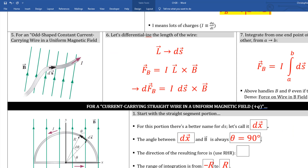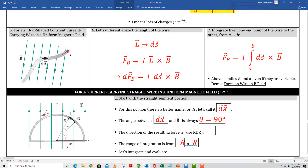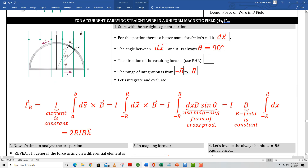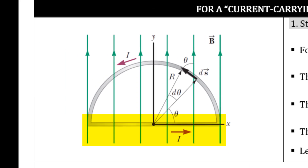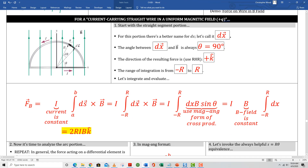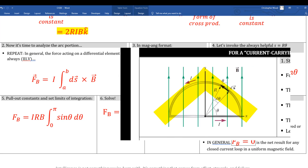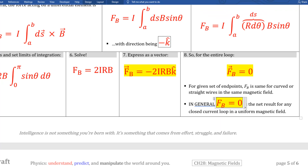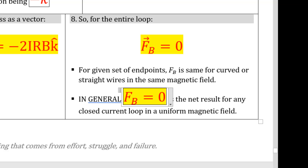Box 5 relaxes the requirements: instead of a straight wire, any-shaped current-carrying wire in a constant magnetic field with constant current is subjected to this force expression. For a wire shaped into a semicircle, break it into two components — the straight line segment and the semicircular arc. The straight line segment has a magnetic force of 2RIB in the k-hat direction. Studying boxes 2 through 7 for the arc shows that the net force on the arc is exactly equal and opposite to the force on the straight segment — so for any closed current loop in a uniform magnetic field, the net force is zero.